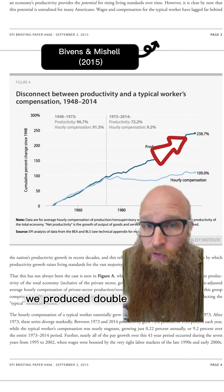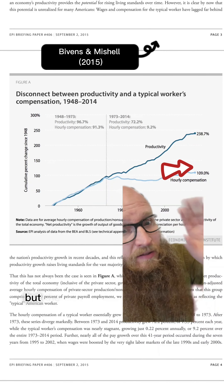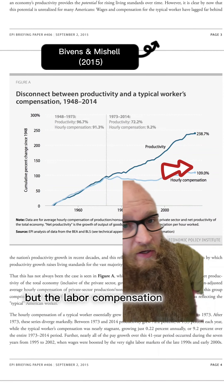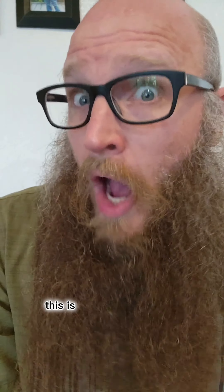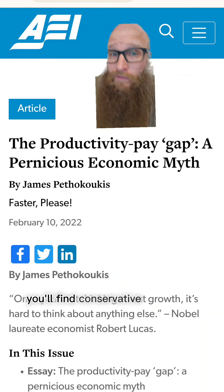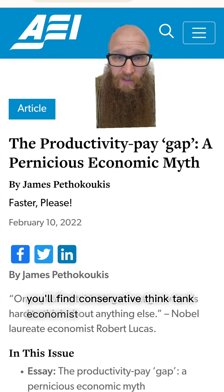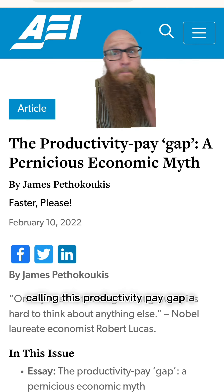What led to the division between labor compensation and productivity in the 1970s? For each individual labor hour, we produce double the GDP that we used to. But the labor compensation hasn't grown as much.